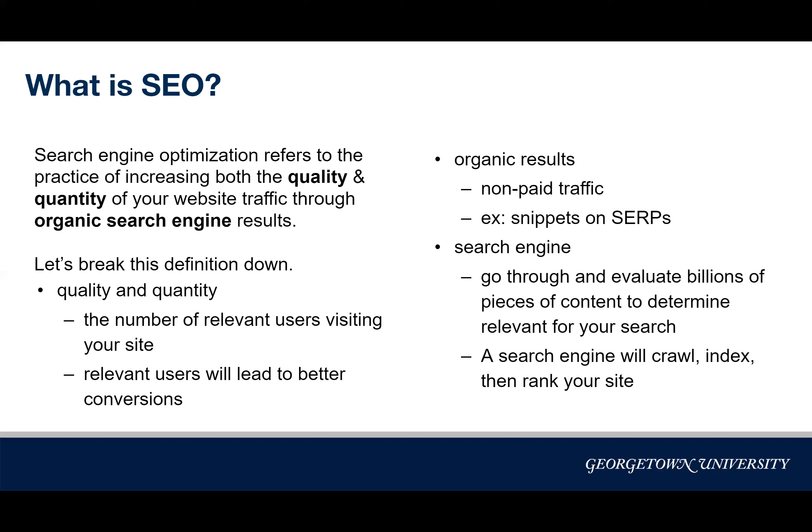You can see an example of organic results when you Google a phrase, and a great example would be the featured snippet that Google puts on the top of the results page. A search engine is going to go through all the content and determine your ranking on the search engine results page. The most popular search engine is Google, which is about 90% of all traffic, but there's also Bing, Yahoo, and some others.